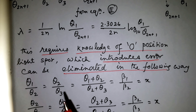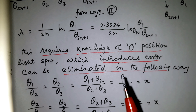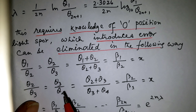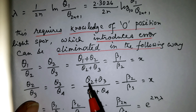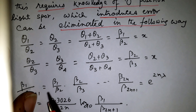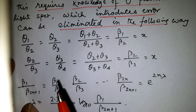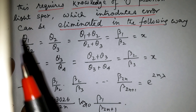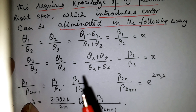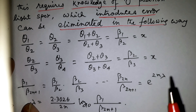The ratio theta_1/theta_2 divided by theta_2/theta_3 may be written as (theta_1 + theta_2)/(theta_2 + theta_3) = beta_1/beta_2 = x. Similarly, (theta_2 + theta_3)/(theta_3 + theta_4) = beta_2/beta_3 = x. So beta_1/beta_2 = beta_2/beta_3 = x = e to the power lambda. With 2n such terms, beta_1/beta_(2n+1) equals e to the power 2n·lambda.